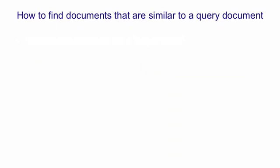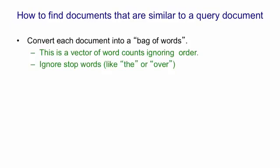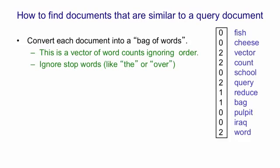To find documents that are similar to a query document, the first thing we do is convert each document into a big bag of words. In other words, we have a vector of word counts that ignores the order of the words. This clearly throws away quite a lot of information, but it also retains a lot of information about the topic of the document. We ignore words like 'the' or 'over', which are called stop words, because they don't have much information about the topic. So if you look on the right, I've done the counts for various words, and they're the counts for the document on the left. The words with non-zero counts are: vector, count, query, reduce, bag, and word — and that tells you quite a lot about what the document is about.